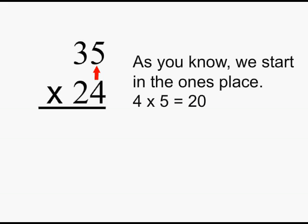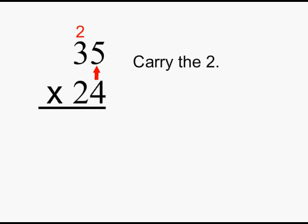As you know, we start in the ones place and multiply 4 times 5, which is 20, carry the 2, put down the 0.